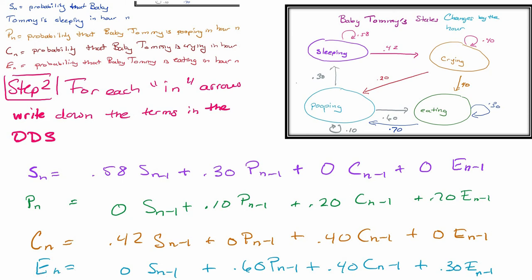The biggest mistakes I see is that cadets will forget the looping back to itself because sometimes that's not explicitly stated in the word problem you're reading. But it has to be there to make things total up correctly. Maybe they'll say there's a 42% chance of going from sleeping to crying, but they don't tell you there's a 58% chance to stay sleeping. But it must be so because that has to total up to be 100%.